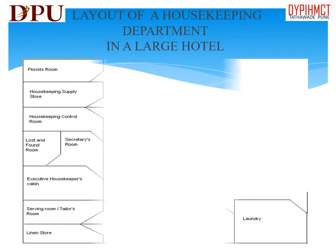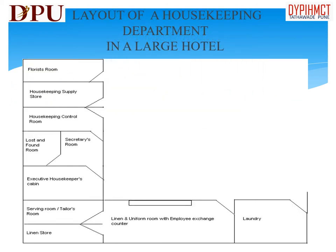Let us understand the layout of housekeeping department in a large hotel: florist room, housekeeping supply store, housekeeping control room, lost and found room, secretary room, executive housekeeper's cabin, sewing room, linen store, linen and uniform room with employee exchange counter, and laundry.